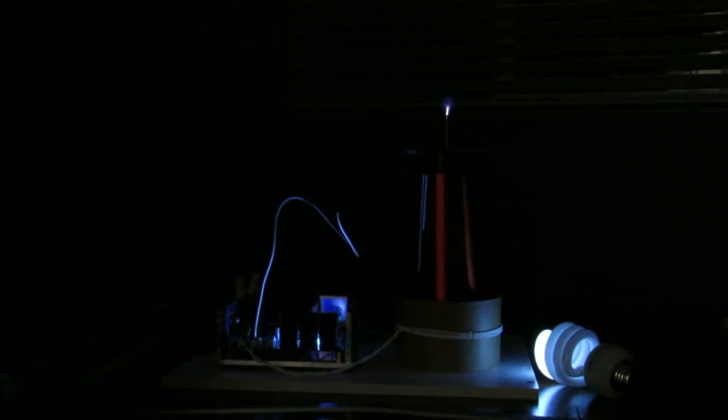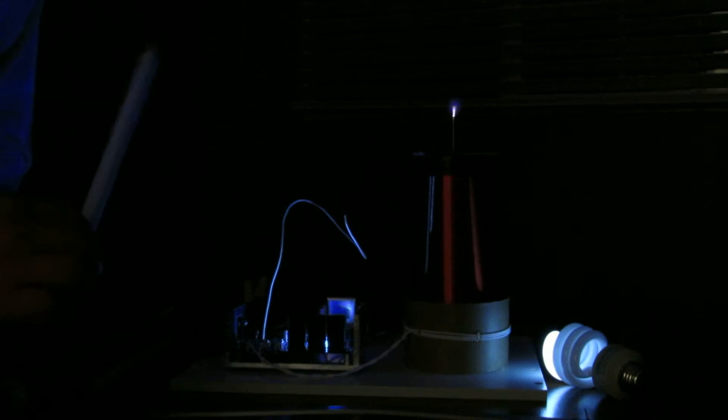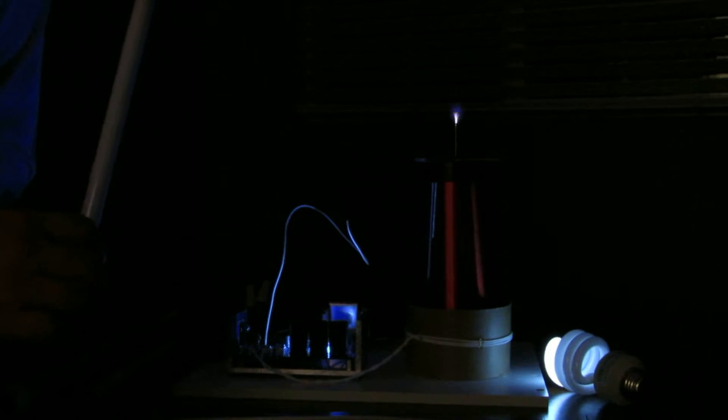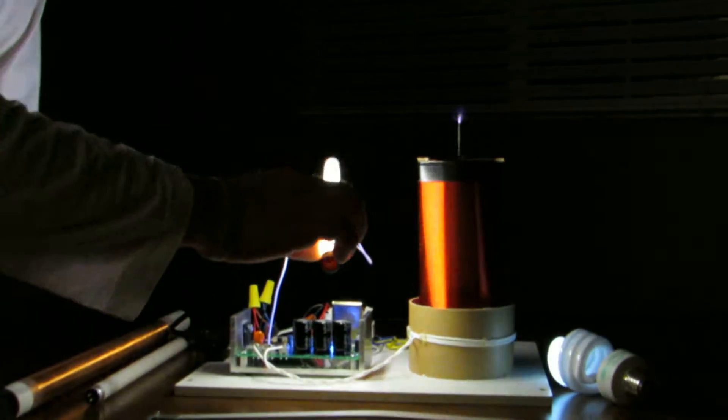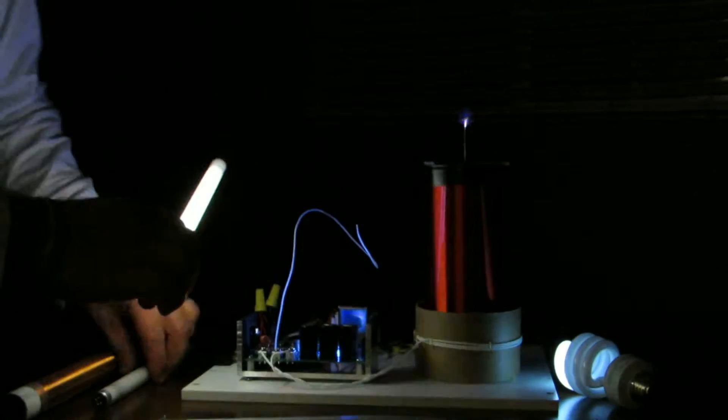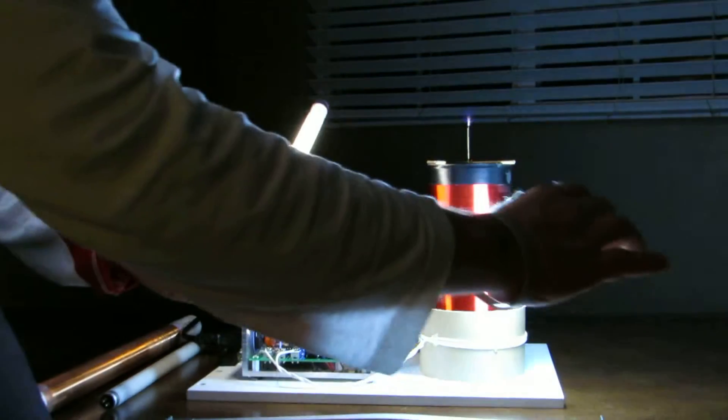Hello, we are showing here the Tesla coil that my daughter made from Eastern Voltage Research Design. It works - it lights up the fluorescent bulbs and everything. There is one here, a second one.